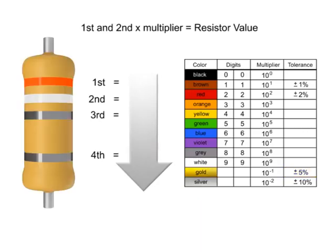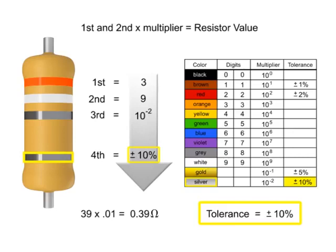In this example, the first band is orange, so the first digit is 3. The second band is white, so digit 2 is 9. The third band is silver, so we multiply the first two numbers by 10 to the negative second power, or .01. In this instance, we would take the 39 and move the decimal point two places to the left, resulting in a value of .39 ohms. Thus, the value of this resistor is .39 ohms with a tolerance of plus or minus 10%.